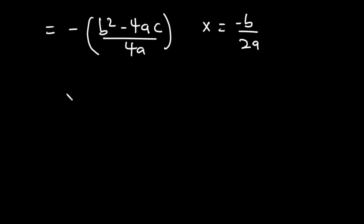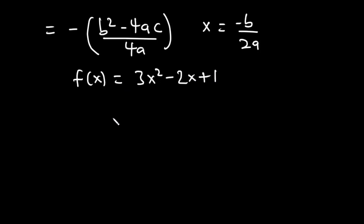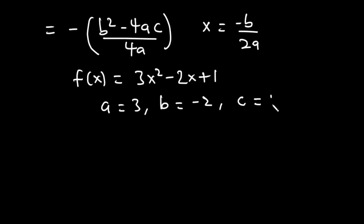Let's solve an example. Given f(x) = 3x² - 2x + 1, what is the minimum value and where does it occur? From the equation, a equals 3, b equals -2, and c equals 1. We substitute these values into the formula.